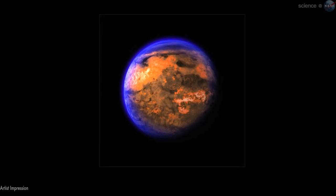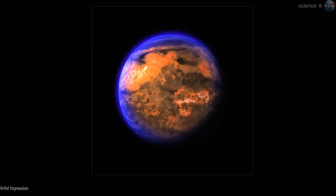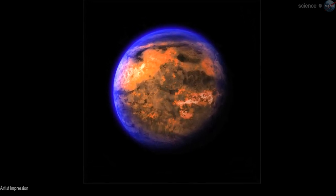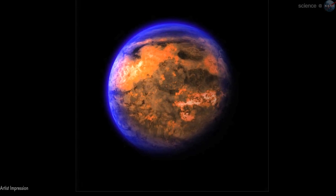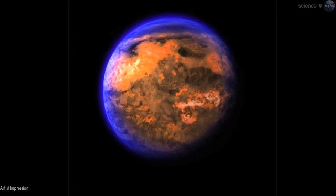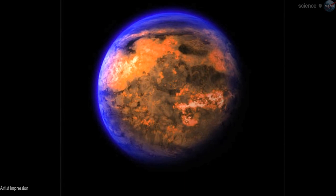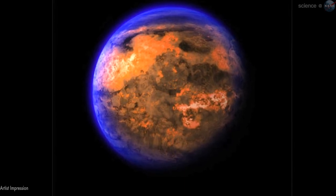About a fifth of the planet's mass must be made of light elements and compounds, including water. Given the intense heat and high pressure these materials likely experience, researchers think the compounds likely exist in a supercritical fluid state.